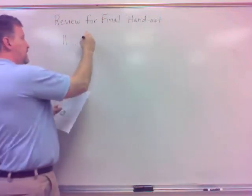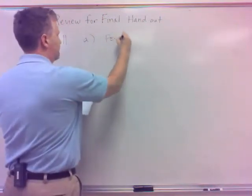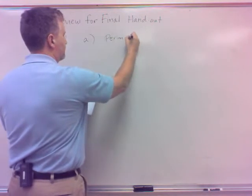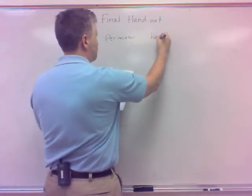All right, number 11, A, we want to know the perimeter of a regular heptagon with 13 centimeter sides.